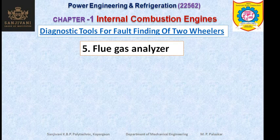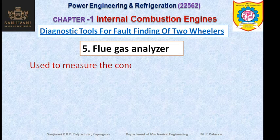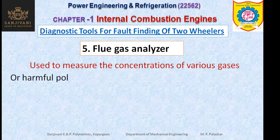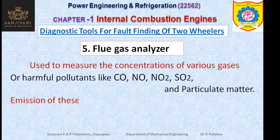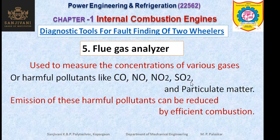An important fault-finding device is the flue gas analyzer. It is used to measure the concentrations of various flue gases. In the exhaust, various harmful gases are present like carbon monoxide (CO), carbon dioxide (CO₂), nitrogen oxides (NOx), nitrogen dioxide (NO₂), sulfur dioxide (SO₂), and particulate matter. These are the harmful pollutants present in the exhaust gases of the engine.